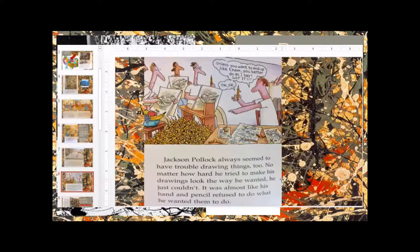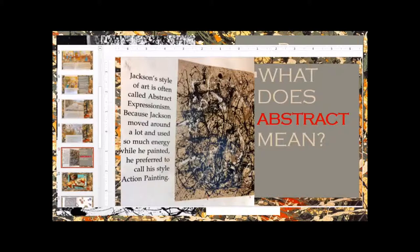Jackson Pollock always seemed to have trouble drawing things, too. No matter how hard he tried to make his drawings look the way he wanted, he just couldn't. It was almost like his hand and the pencil refused to do what he wanted them to. You can see all the broken pencils. So he got really frustrated trying to make things look real.